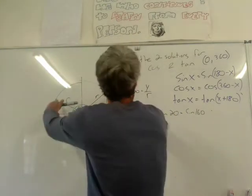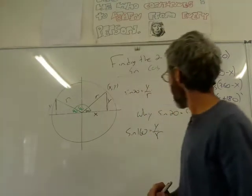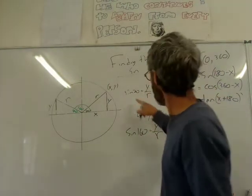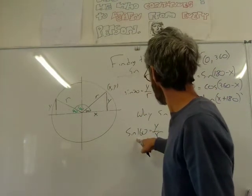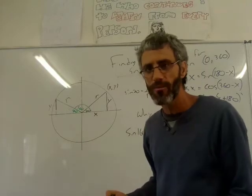But y, these two y's are the same. So I've written the same thing. Sine 20 is equal to sine 160. They're both equal to y over r.